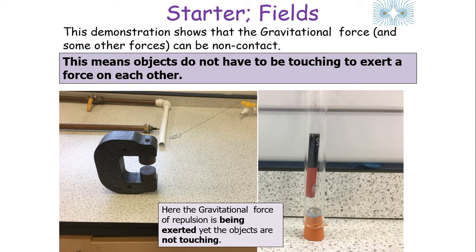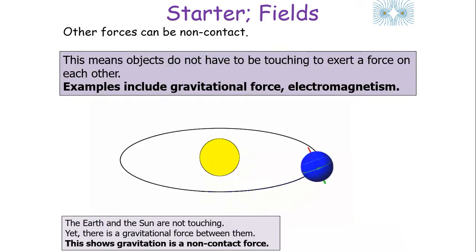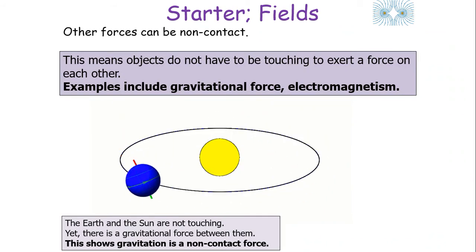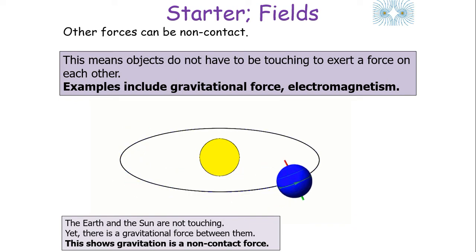Looking at the following pictures, some forces such as the magnetic force, the electrical force, and the gravitational force can be non-contact. This means the objects do not have to be touching each other to exert force on each other. For example, the Earth and the Sun are not touching, yet there's a gravitational force between them, which shows us that gravitation is a non-contact force.